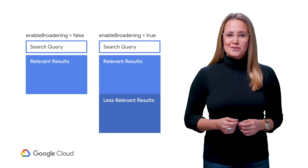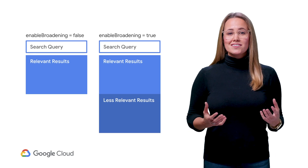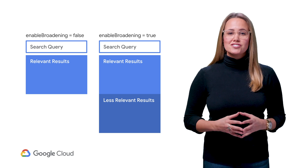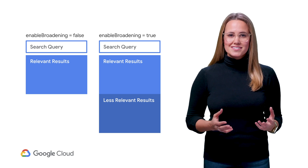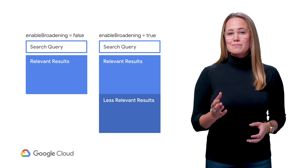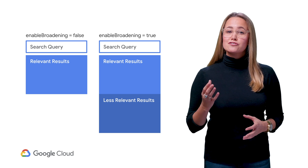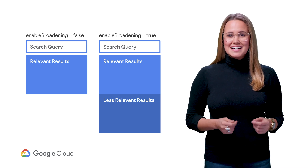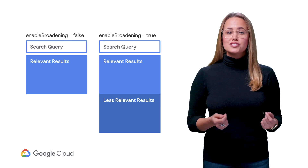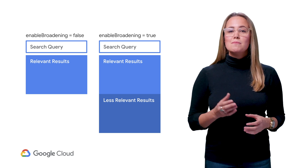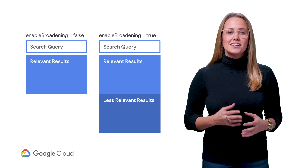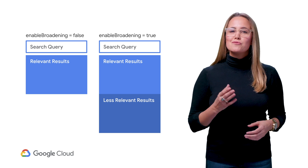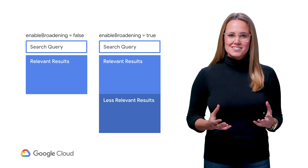Enable Broadening does exactly what it sounds like — it broadens the search results that get returned. It does this by relaxing the restrictions on location and job categories. This is a binary property, so it's either true or false, and defaults to false if you don't set it yourself. Setting it to true will give more results to a search query, but may start to return extended results that aren't an exact match for what the user searched for. Don't worry — the most relevant jobs will still appear first.